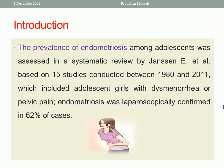What about the prevalence of endometriosis? The prevalence among adolescents was assessed in a systematic review by Janssen et al., based on 15 studies conducted between 1980 and 2011. The review included adolescent girls with dysmenorrhea or pelvic pain, and endometriosis was laparoscopically confirmed in 62% of cases. Imagine how significant the prevalence of endometriosis is in adolescent girls who complain of chronic pelvic pain or dysmenorrhea — 62%.